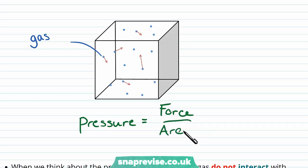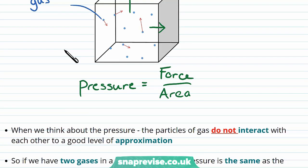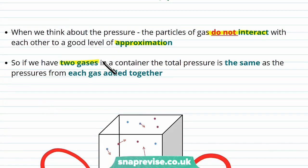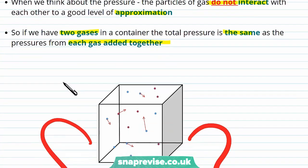If we wanted the total pressure in this box, we'd find the total force pushing on each of these walls — the gas pushing outwards — and divide by the surface area of the box. When we think about gases acting in this way, we do not treat the particles as interacting with each other, and this works to a good level of approximation. So if we have two gases in the container, the total pressure is the same as the pressures from each individual gas added together.